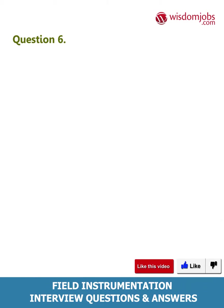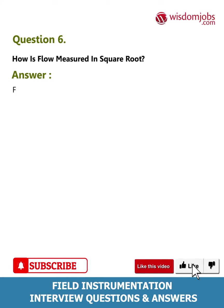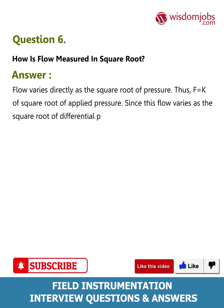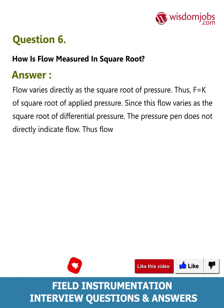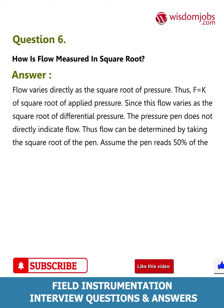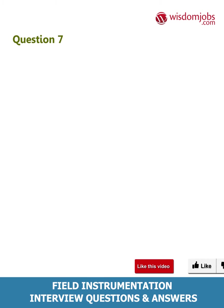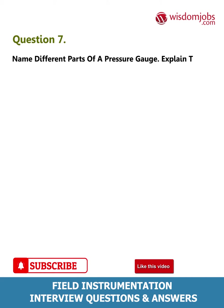Question 6: How is flow measured using square root? Answer: Flow varies directly as the square root of pressure, thus F equals K times the square root of applied pressure. Since flow varies as the square root of differential pressure, the pressure pen does not directly indicate flow. Flow can be determined by taking the square root of the pen reading. Assume the pen reads 50 percent of the chart — flow can then be calculated using the pen measurement on the chart.